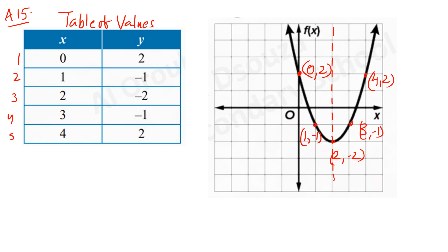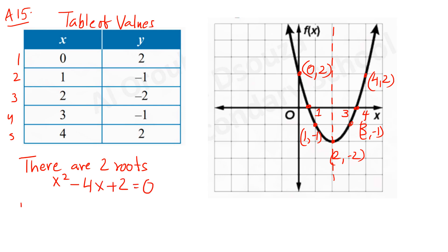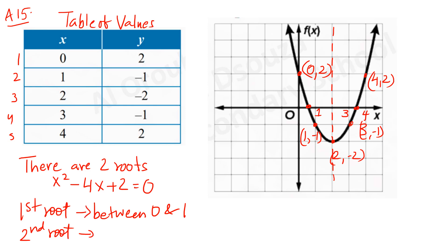For the second part: after getting the graph, look at the x-intercepts. We don't know the exact value but we can see one x-intercept lies between 0 and 1, and the other lies between 3 and 4. So the two roots of x² - 4x + 2 = 0 lie between 0 and 1 (first root) and between 3 and 4 (second root).